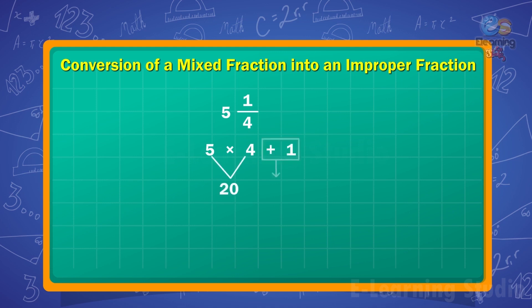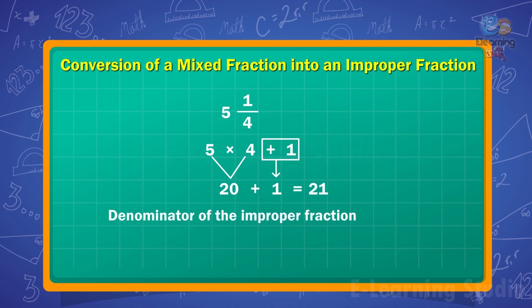And then we add the numerator. The denominator of the improper fraction is equal to 4. So, 5 and 1 upon 4 is equal to 21 upon 4.